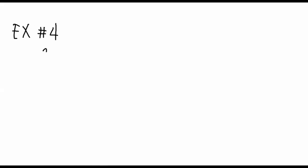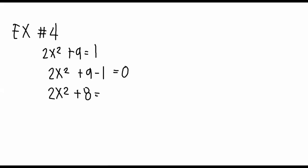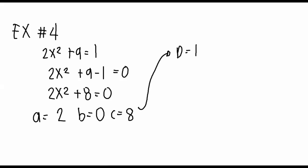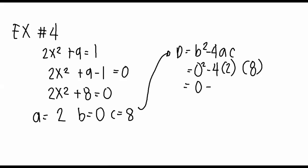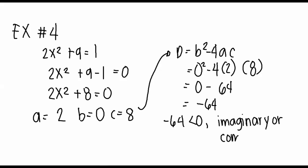Now for our example number four, we have 2x squared plus 9 equal to 1. Let's put the equation in the general form, which gives us 2x squared plus 8 is equal to zero, where a is equal to 2, b is equal to zero, and c is equal to 8. We have 0 squared minus 4 times 2 times 8, which is equal to negative 64. Since negative 64 is less than zero, our roots are imaginary or complex.